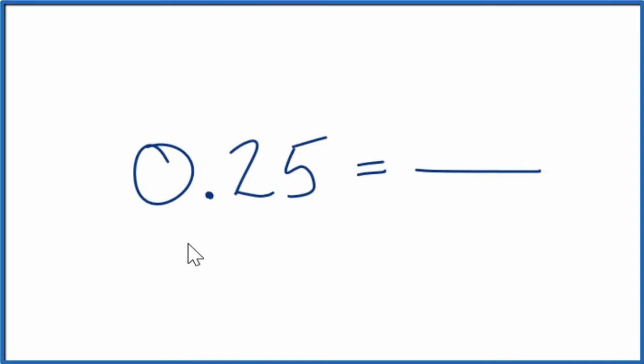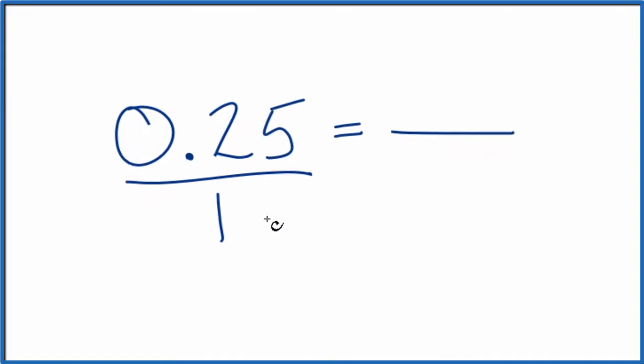Let's convert the decimal 0.25 to a fraction, where we have the numerator divided by the denominator. You can think of 0.25 as 0.25 over 1. It's the same thing, it's just we divided by 1, and now we have the start of a fraction.